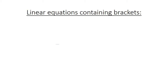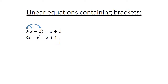Linear equations containing brackets. We have 3 in brackets: x minus 2 equals x plus 1. We multiply out: 3x minus 6 equals x plus 1. The x moves over to one side and the negative 6 also moves. We get 3x minus x equals 1 plus 6. So 2x equals 7, and x equals 7 over 2.